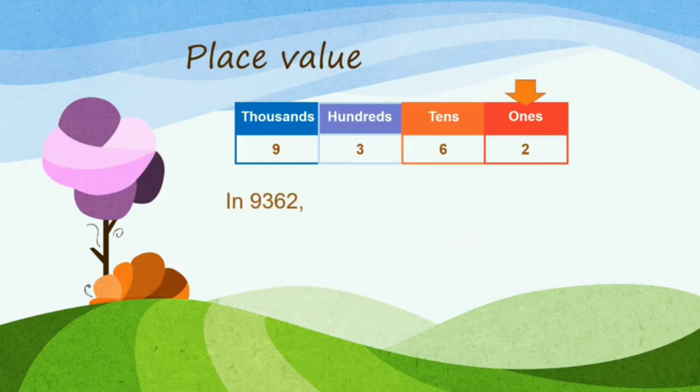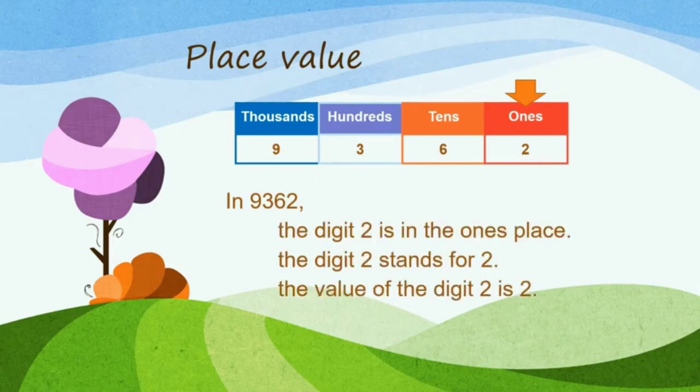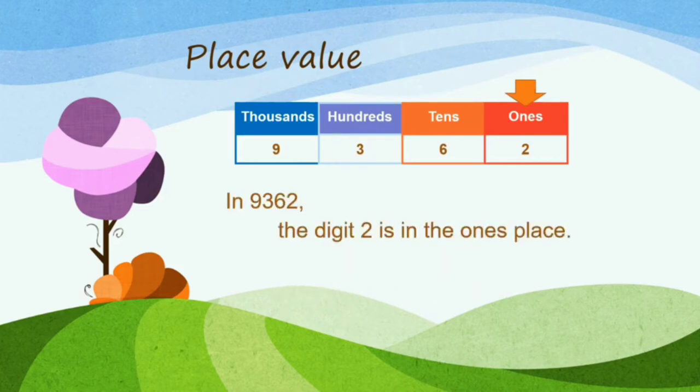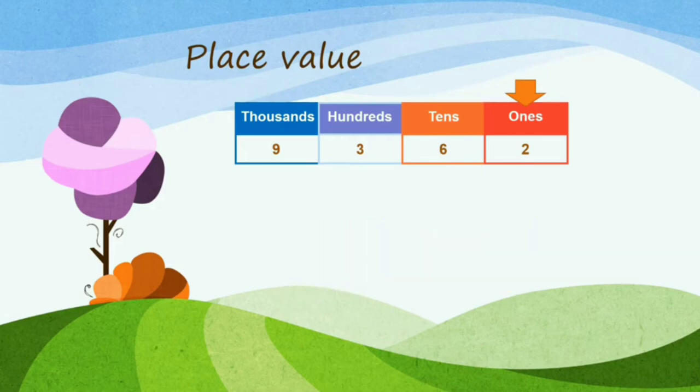Baik, teman-teman, angka terakhir kita adalah angka 2. The digit 2 is in the 1st place. The digit 2 stands for 2. The value of the digit 2 is 2. Teman-teman, kita bisa mengerti ini di bahasa Indonesia adalah sebagai satuan untuk angka yang terakhir kita pada pagi hari ini.